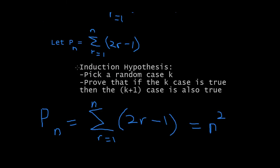Then, this is really the meat of an induction. These are the hypotheses, or assumptions of the induction. So, basically, you pick a random case, K. You prove that, if a K case is true, then the K plus 1 case is true. And if that is true, then any number is true for this situation.